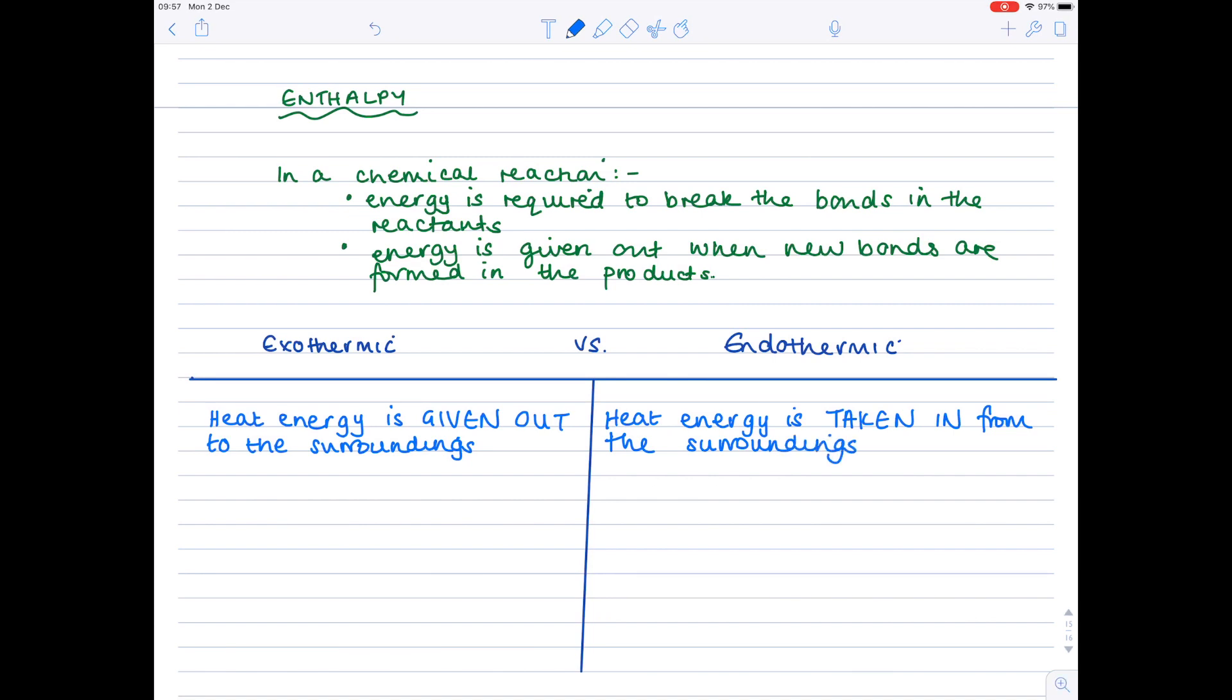Looking at definitions relating to bond strength then. So with exothermic reactions the bonds of the products are stronger than the bonds in the reactants. Whereas with endothermic reactions our definition is reversed so bonds in the reactants are stronger than bonds in the products.